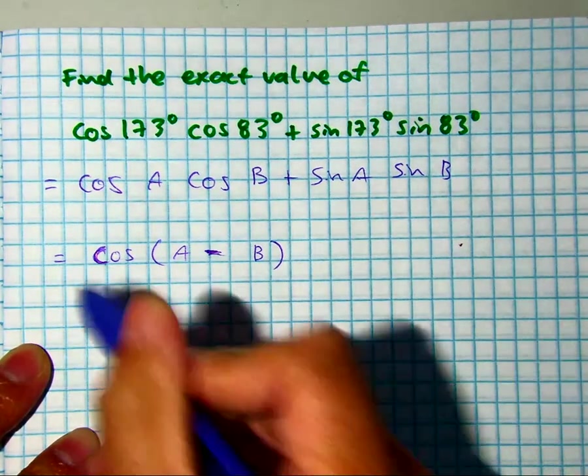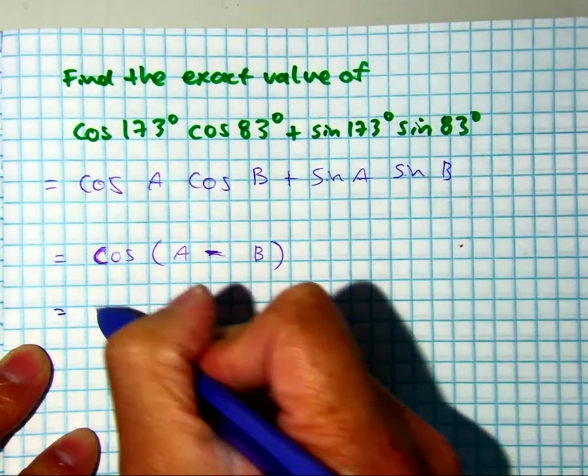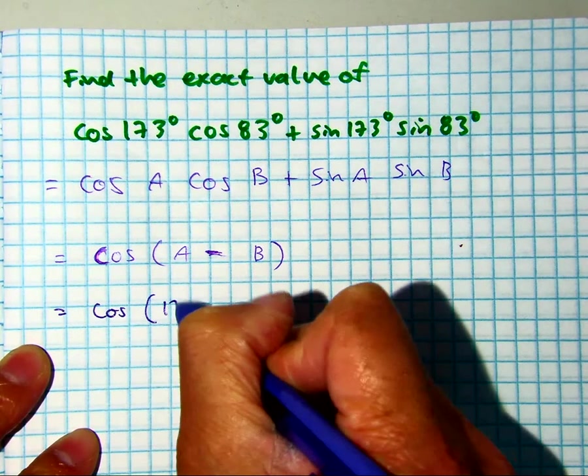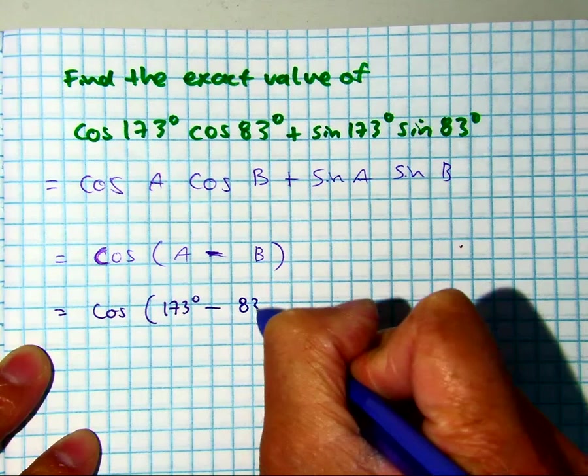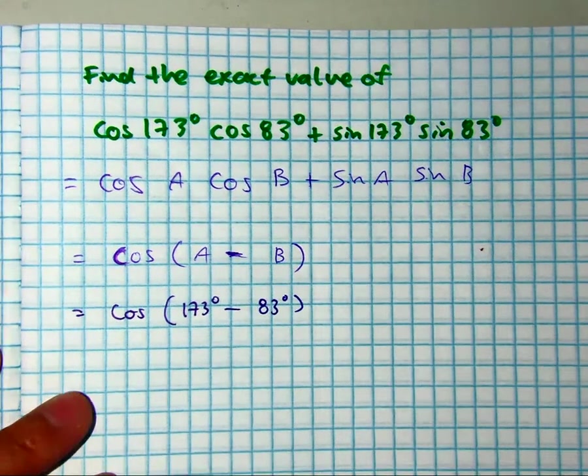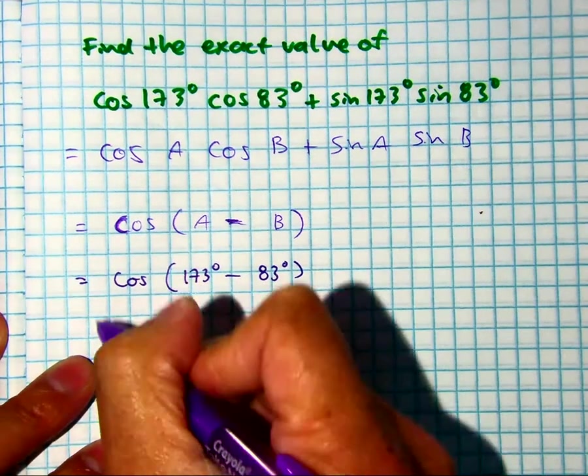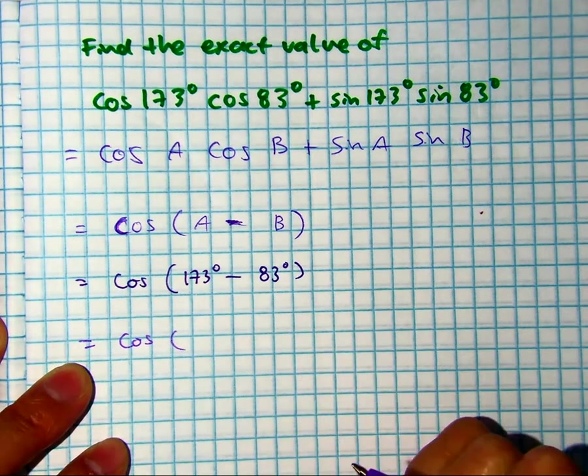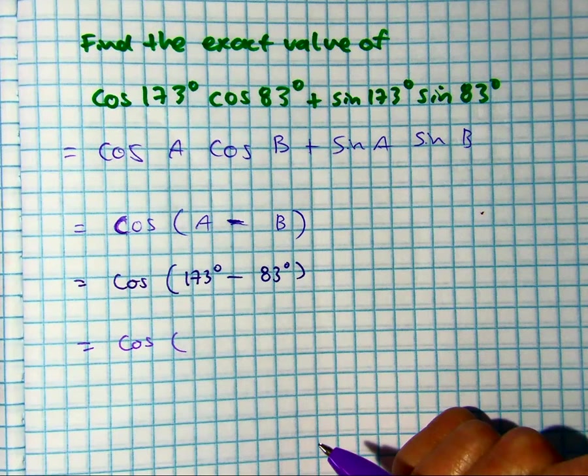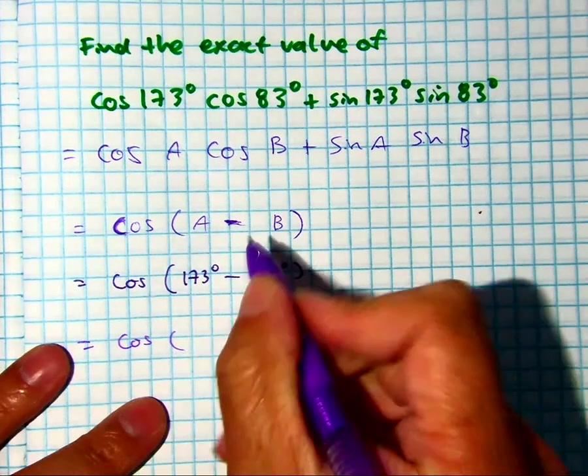So, if I know that my A value is 173, and my B value is 83 degrees, if I subtract these two, you will get 90 degrees.